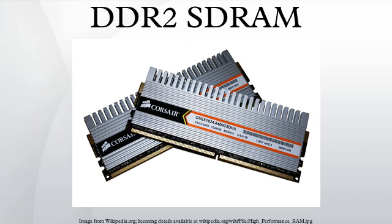DDR2-DIMMs are not backward compatible with DDR-DIMMs. The notch on DDR2-DIMMs is in a different position from DDR-DIMMs, and the pin density is higher in desktops. DDR2 is a 240-pin module while DDR is a 184-pin module. Notebooks have 200-pin modules for both DDR and DDR2; however, the notch on DDR2 modules is in a slightly different position. Higher speed DDR2-DIMMs are compatible with lower speed DDR2-DIMMs, although the motherboard or CPU memory controller will be bound to the limits of the lower performance modules.